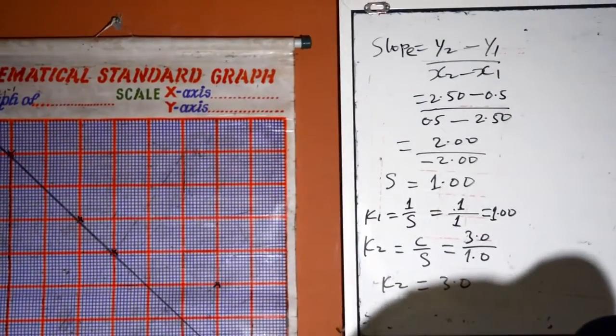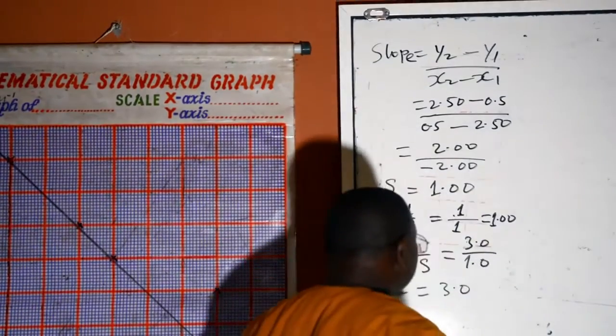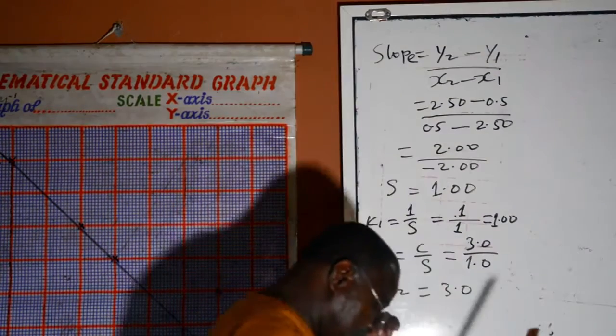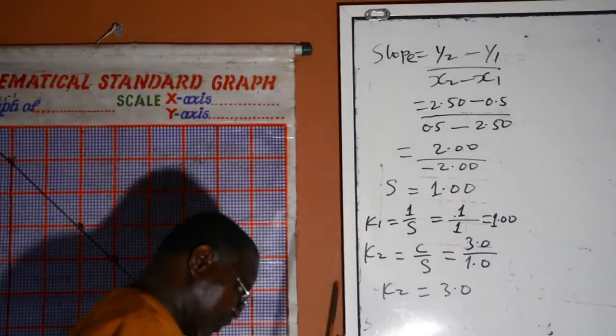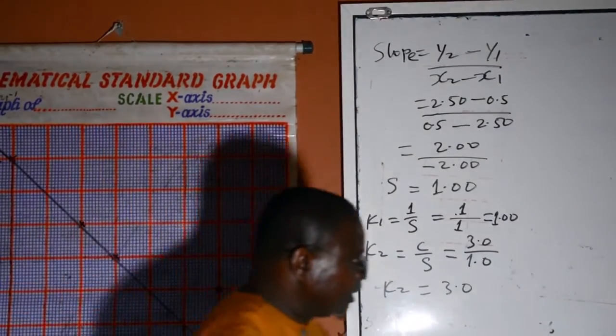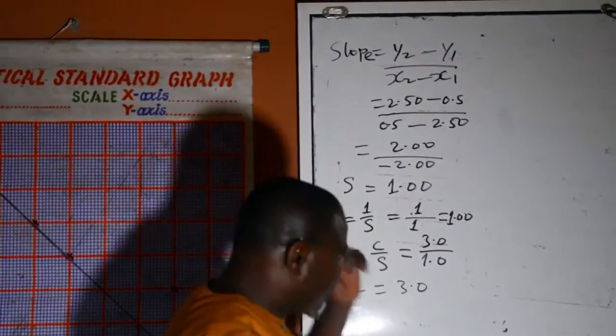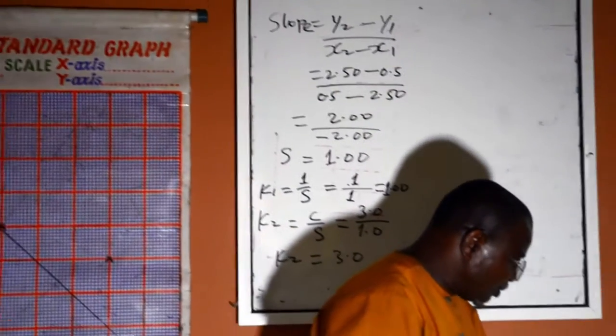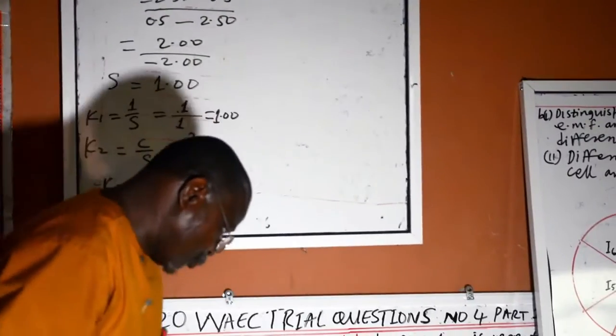We are directed to state precaution. First precaution, I noted and corrected zero error in the ammeter. The second precaution, I noted and corrected zero error in the voltmeter.